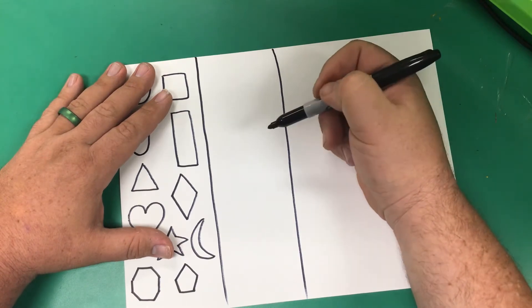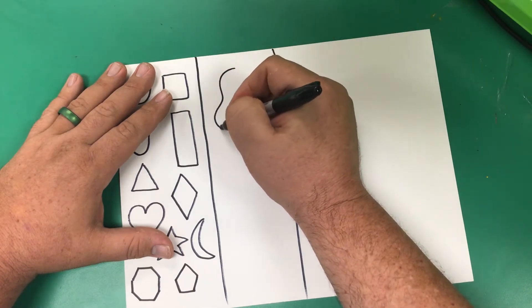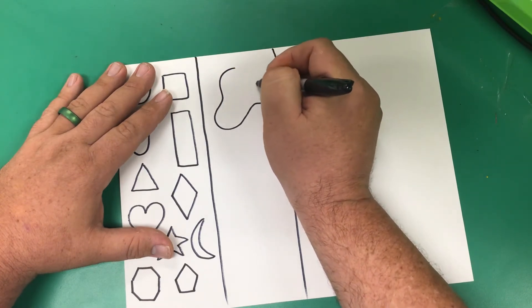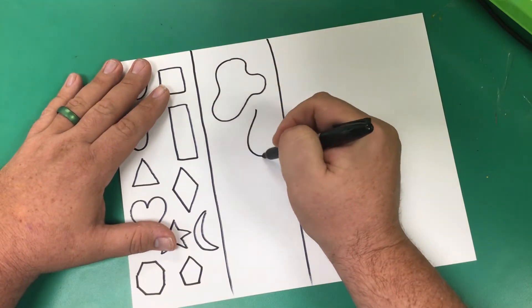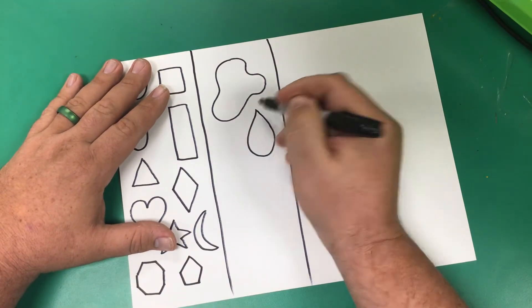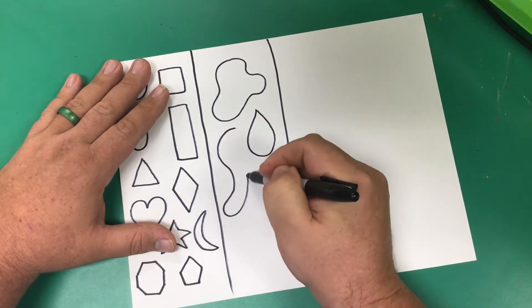And then that's what that shape is. It looks like a, so you can say it looks like a mud puddle, it looks like a raindrop, it looks like a worm.